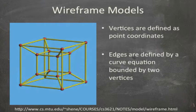Let me go through in a bit more detail on what is a wireframe model. Basically, a wireframe model is what you'll see in the picture shown. The vertices, which are the red color points, are defined as point coordinates, most likely in the Cartesian coordinate in which there is an X, Y, and Z. Then, the edges, which are shown as a yellow color tube, are defined by a curve equation that's bounded by the two vertices.